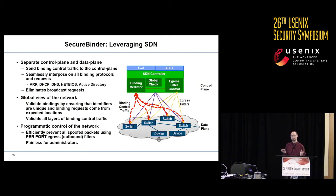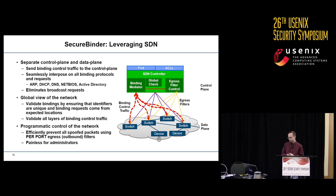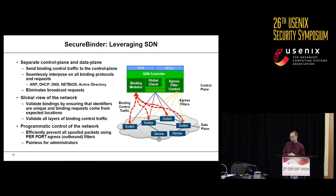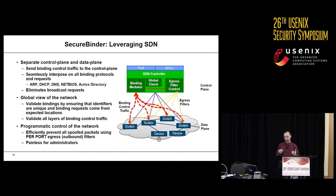One of the really nice things this does is it eliminates the broadcast character of these requests. While the traffic will go from the device to the controller, the controller knows all these bindings and never actually has to broadcast out to the rest of the network. SDN's global view also means we can validate these bindings to ensure identifiers are unique, at their expected locations, and that all layers of binding control packets are valid. SDN also lets us efficiently prevent all spoofed traffic in the network by using per-port egress filters, which we can do at a very fine-grained level programmatically and painlessly for administrators.